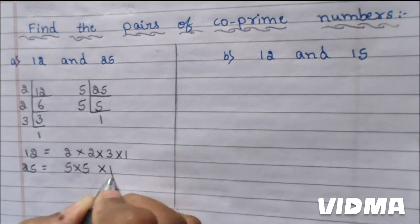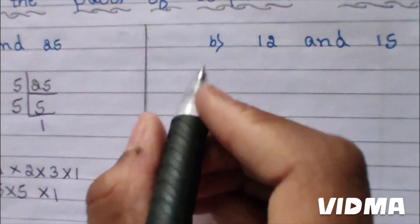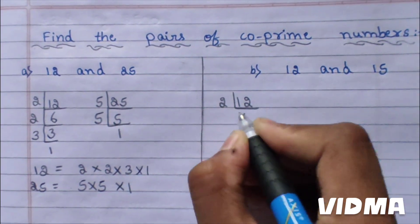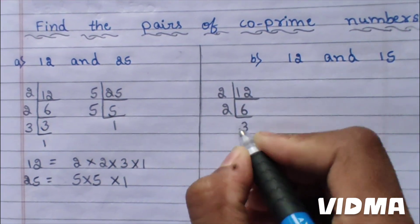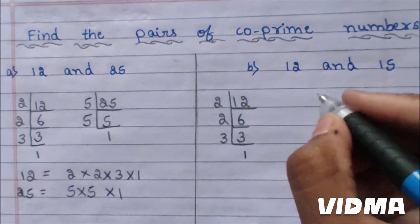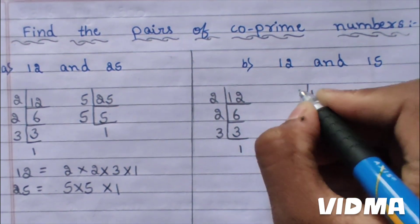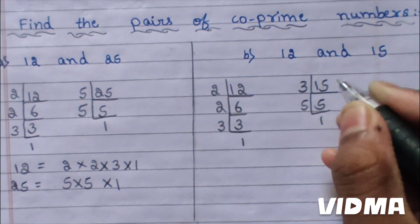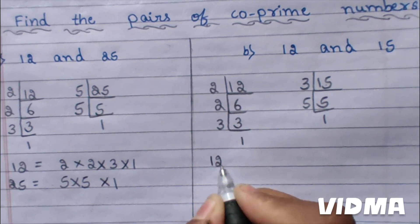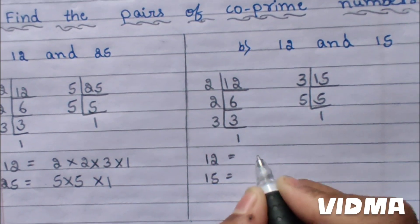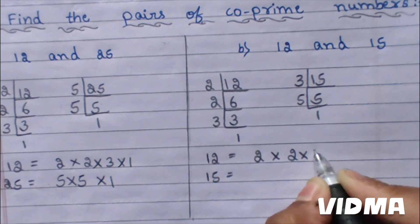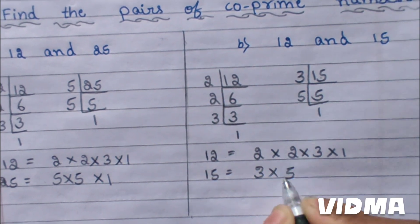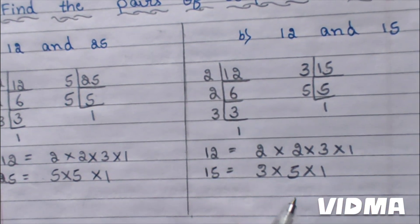Now 12 and 15. First we do 12: 2 times 6 is 12, 2 times 3 is 6, 3 times 1 is 3. Next 15: 3 times 5 is 15, 5 times 1 is 5. So 12 equals 2 into 2 into 3, and 15 equals 3 into 5 into 1. Now we have to make the pair.